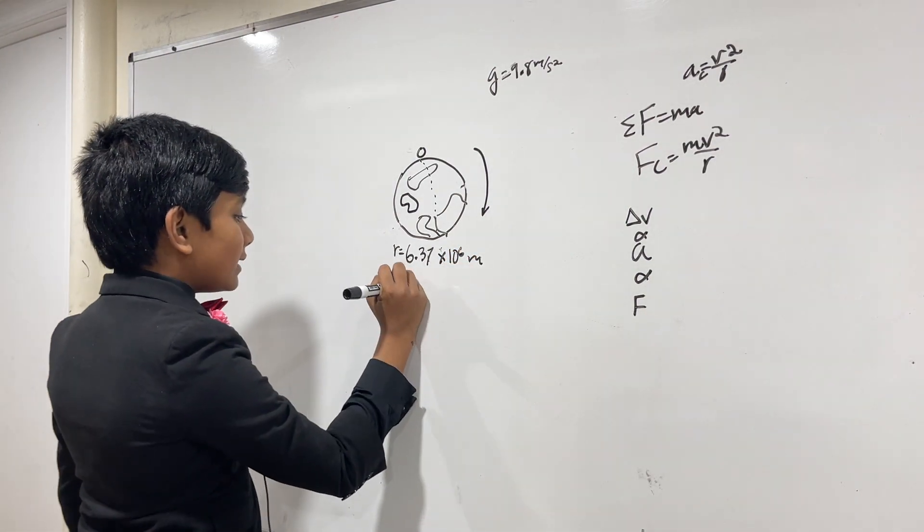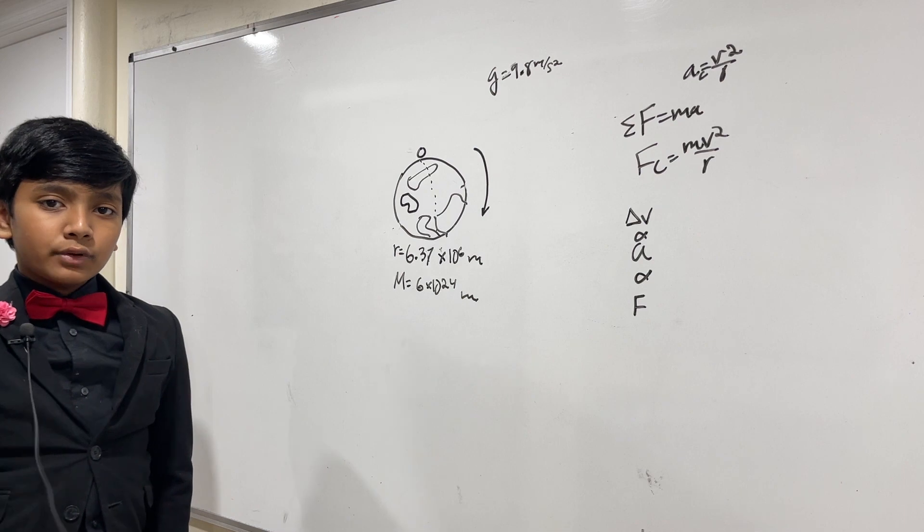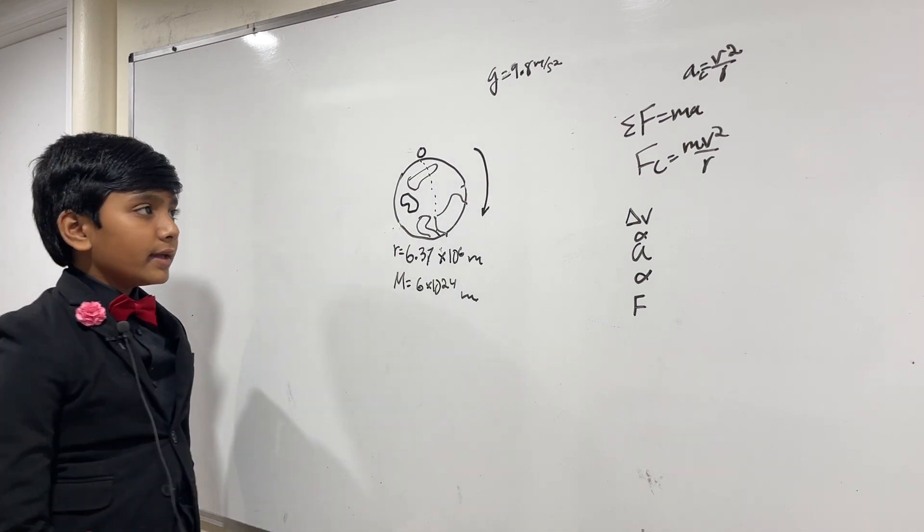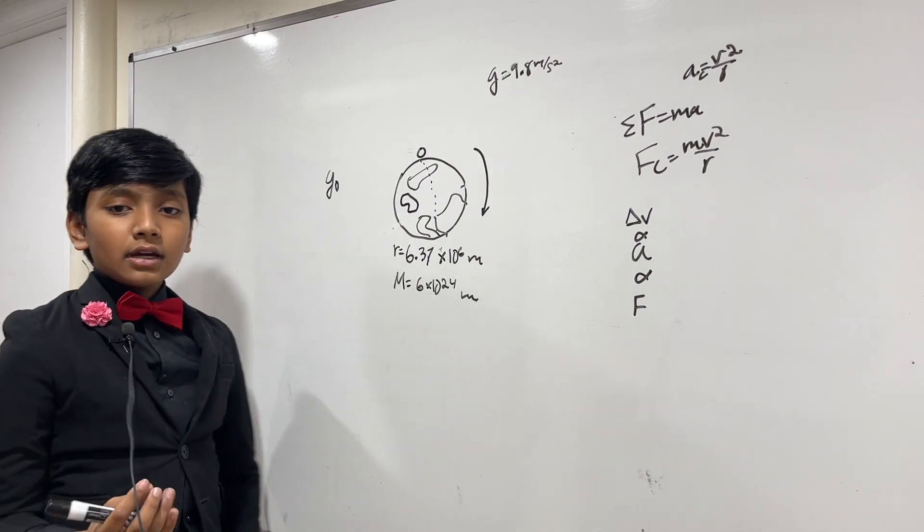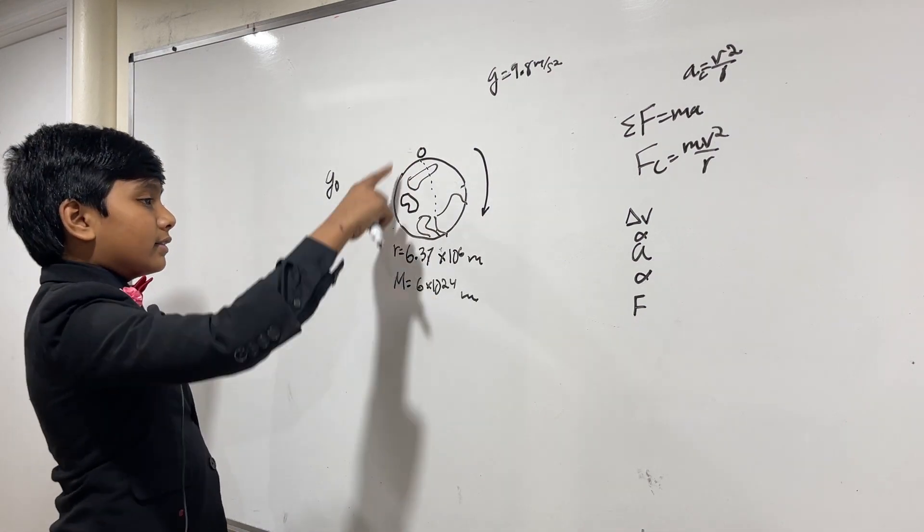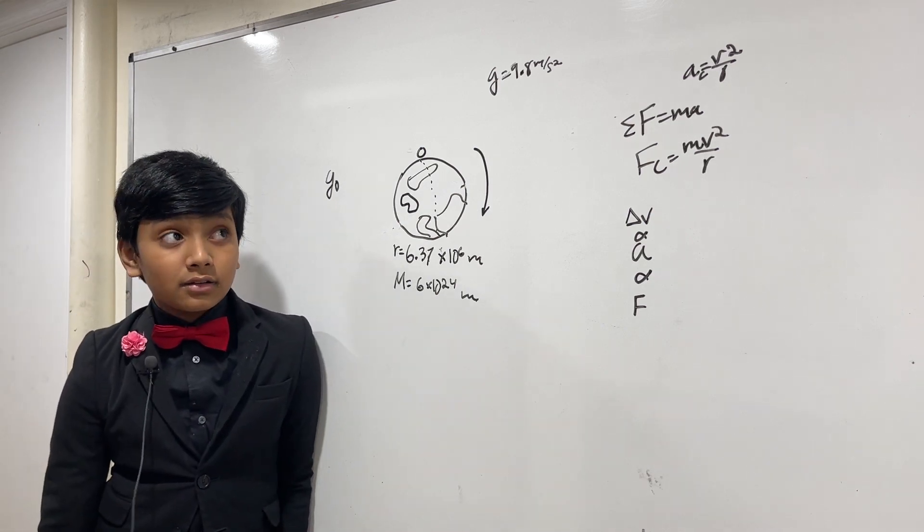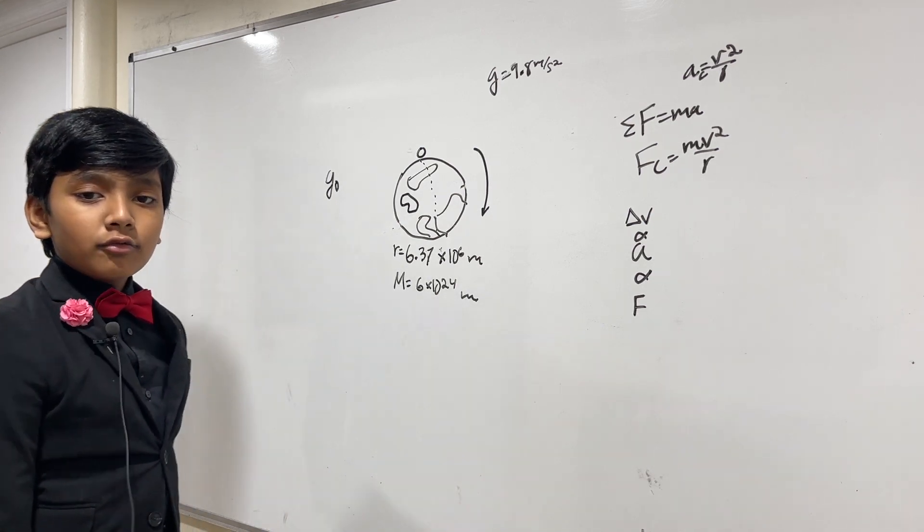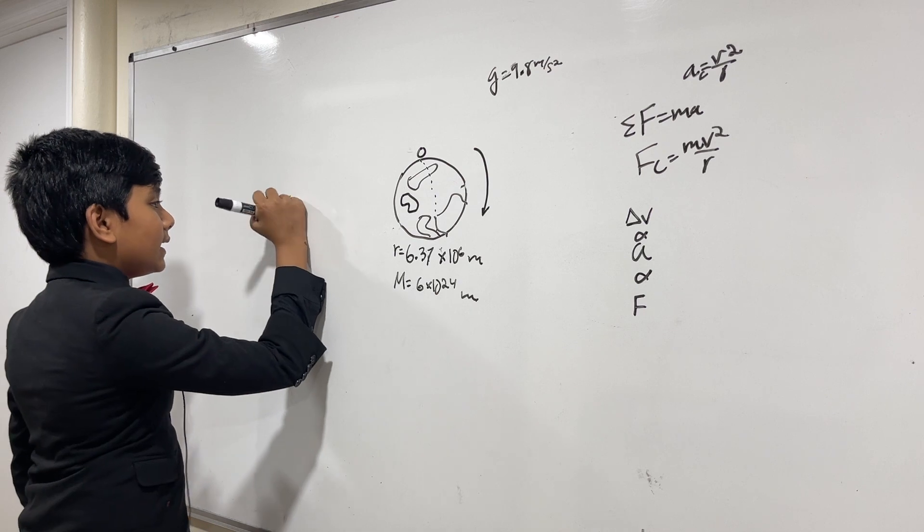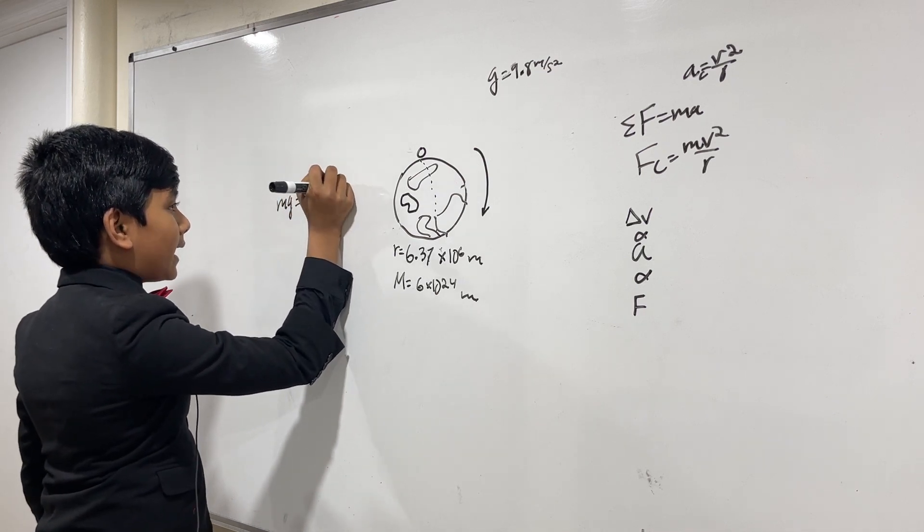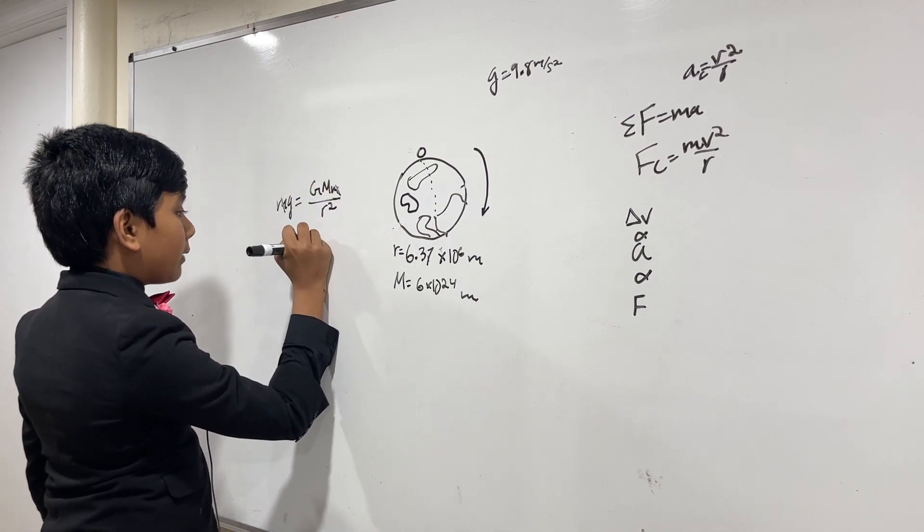Given that, and given the mass is about 6 times 10 to the 24, I'm not using 5.98 because no one likes that number, we are going to try and find G naught, or absolute G. Well, it's pretty damn simple.